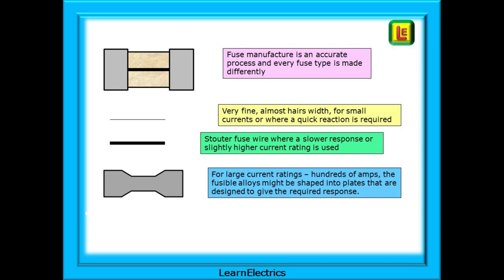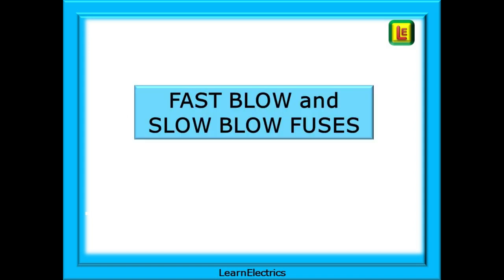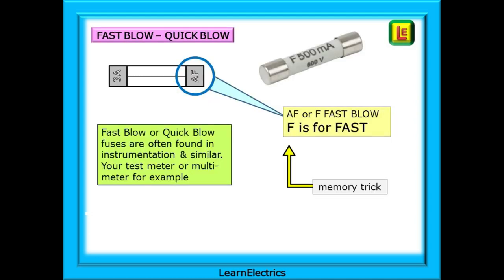Making fuses is an accurate process and every fuse type is made differently — from very fine, almost hair's-width wires for small currents or where a quicker reaction is required, to a much stouter fuse wire where a slower response or higher current rating is needed. For large industrial machinery applications where hundreds of amps are common, the fusible alloys might be a shaped plate designed to give the required response to overloads. You may come across fast blow and slow blow fuses. A fast blow or quick blow fuse does just what it says — as soon as the current exceeds the rated value, it blows instantly. These are generally found in instrumentation panels or in your test meter, protecting delicate parts of the printed circuit board. To remember: F or AF on the fuse means fast blow — F is for fast.